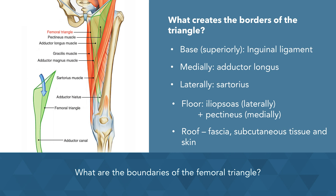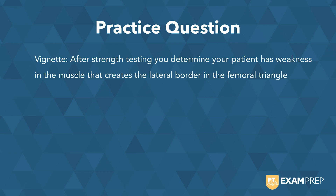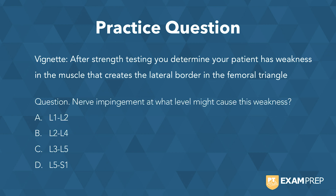Let's give you a practice question. Here's the vignette: after strength testing, you determine your patient has weakness in the muscle that creates the lateral border of the femoral triangle. The question is: nerve impingement at what level causes this weakness? The answer is L2 to L4.